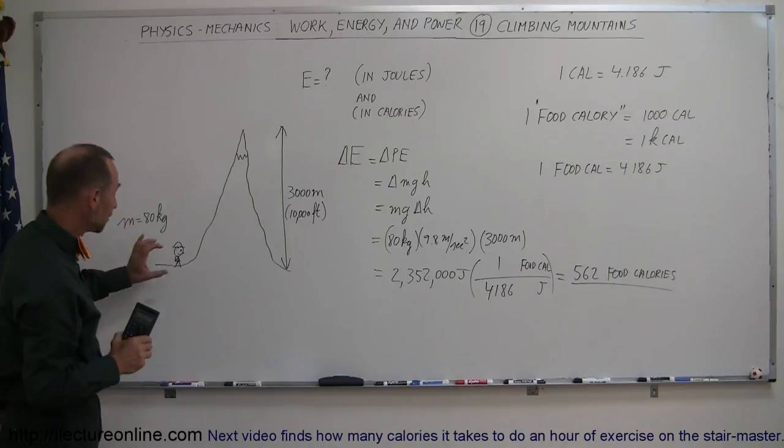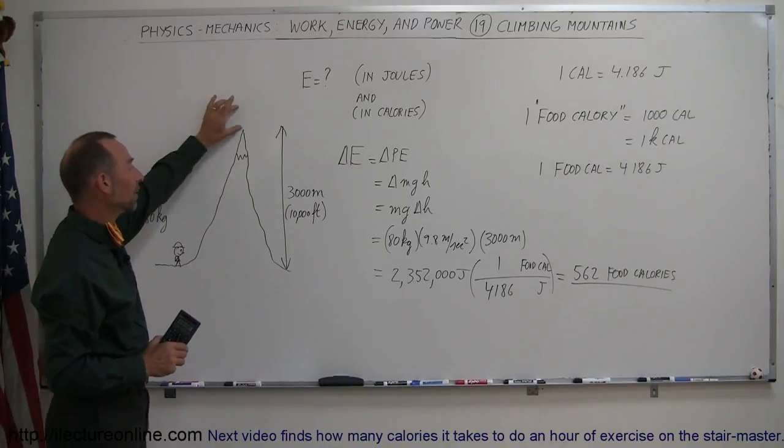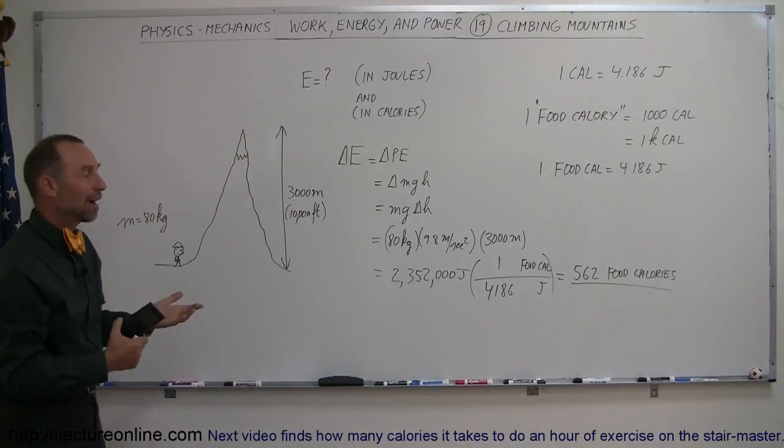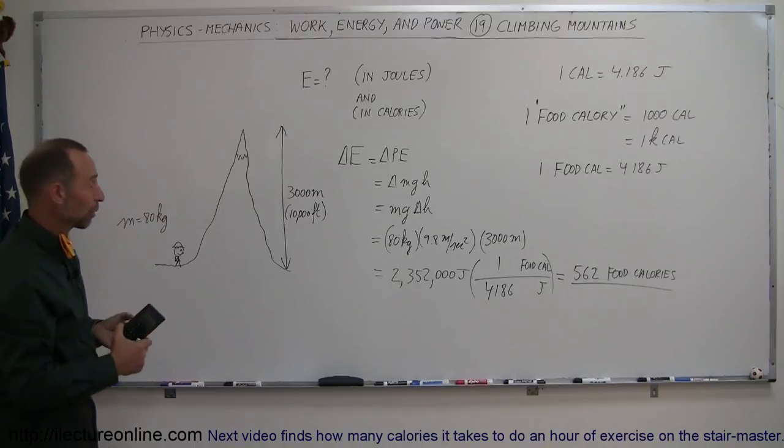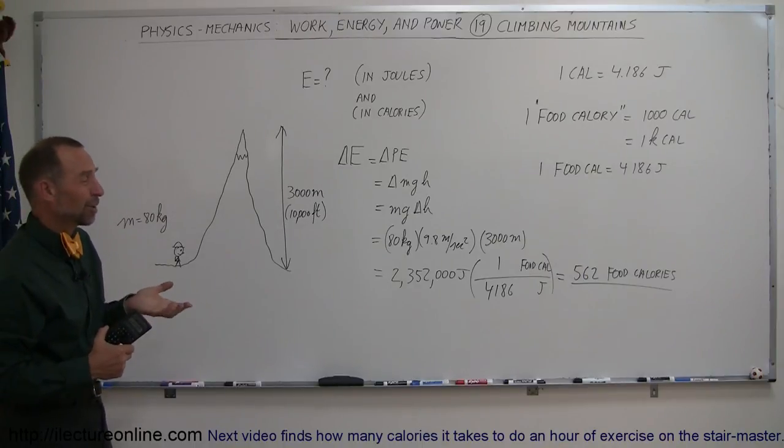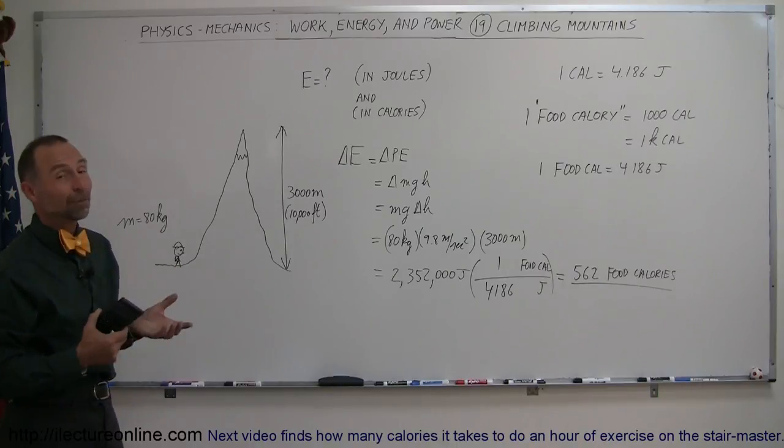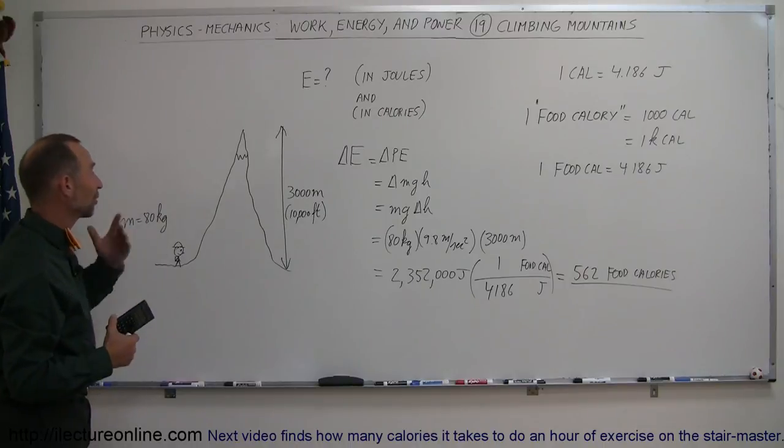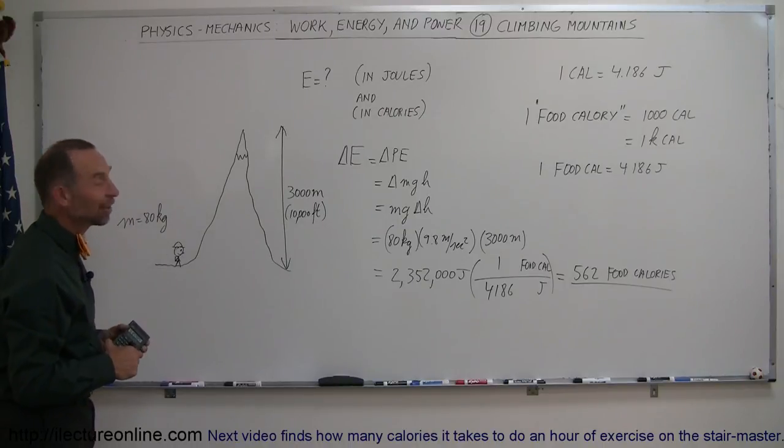So strictly speaking, to take the energy required to take a hiker and put him on top of the mountain is that many food calories. But that's simply for the body to overcome gravity. The body does a lot more work for it to be able to hike all the way to the top. So in actuality, it may be as much as three or four times as much. But nevertheless, that's still pretty good. So on three or so hamburgers, you can have enough energy to walk to the top of a mountain. That's pretty good.